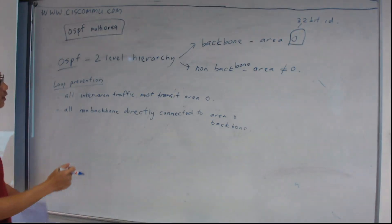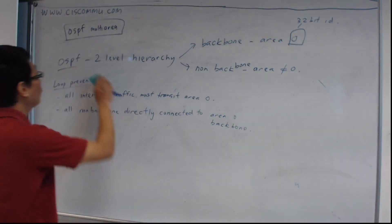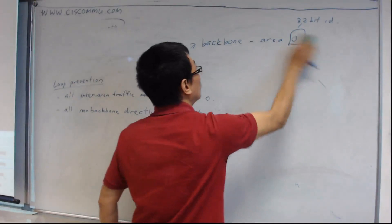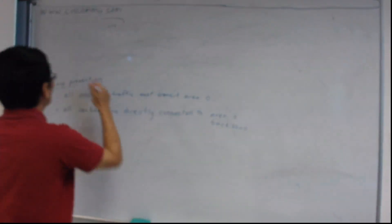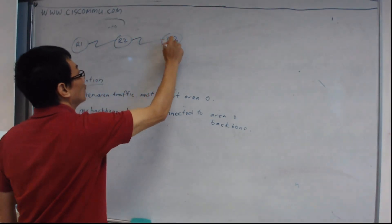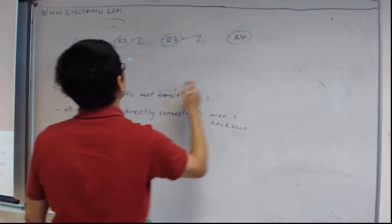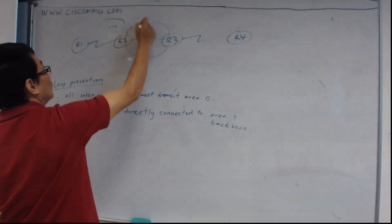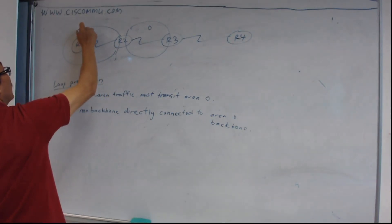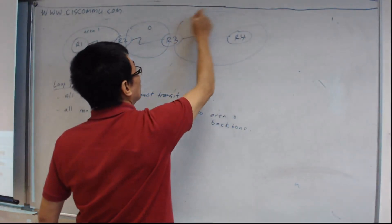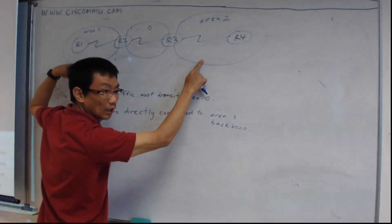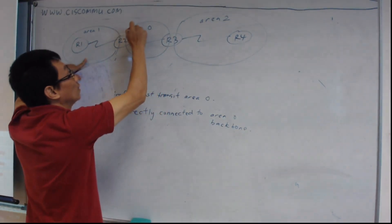For example, suppose you have a network with router 1, router 2, router 3, and router 4. You have area 0 here, area 1 here, and area 2 here. You can see that area 1 and area 2 are both directly connected to area 0.